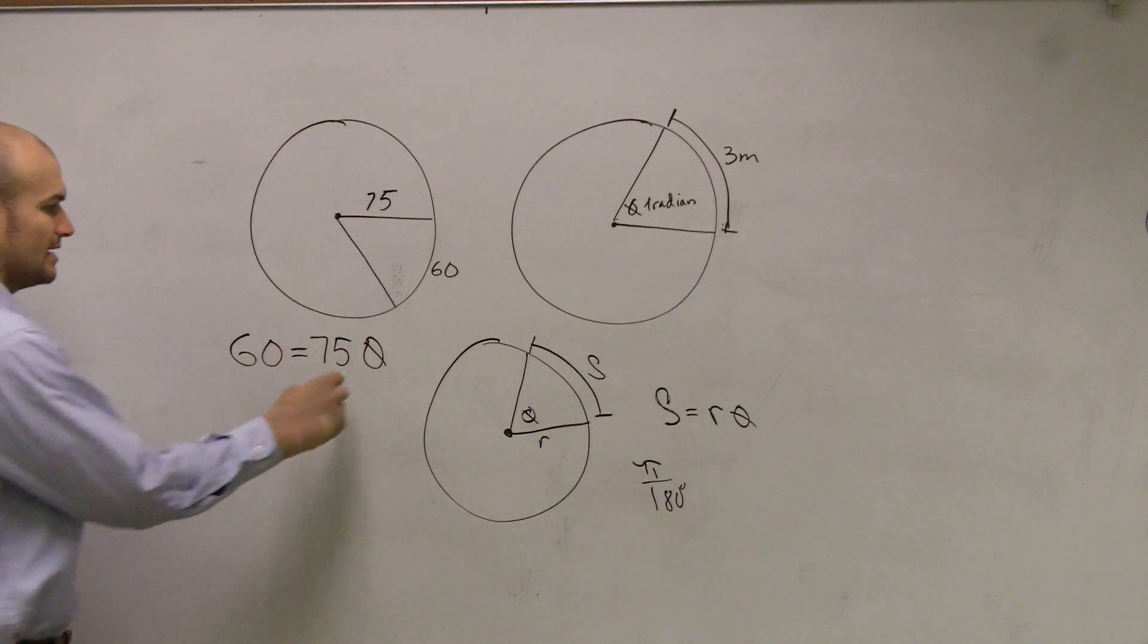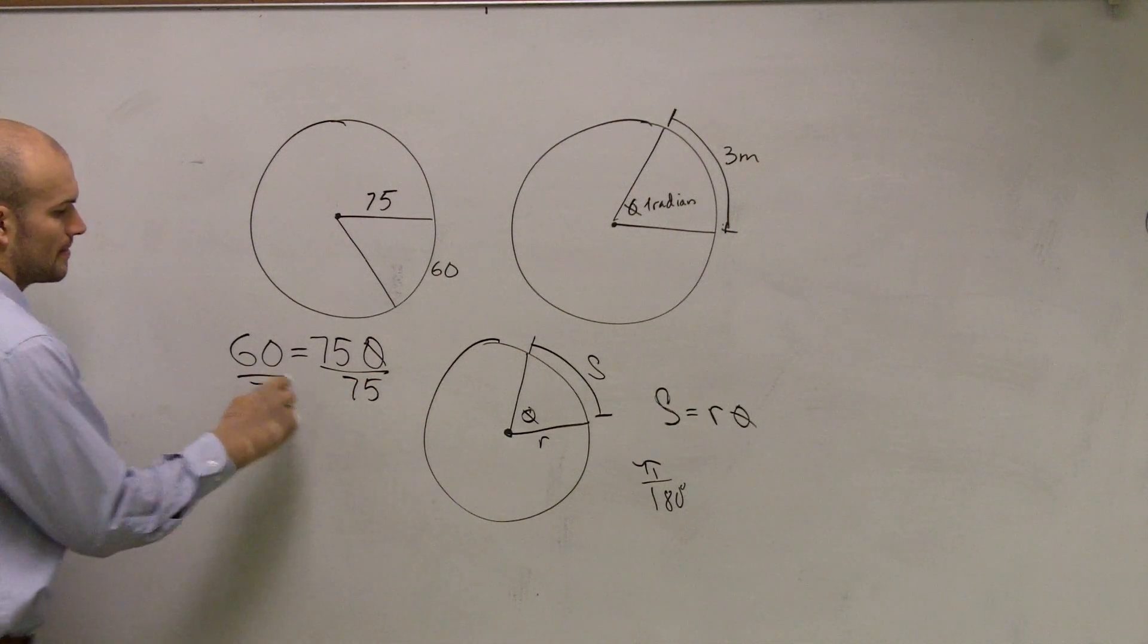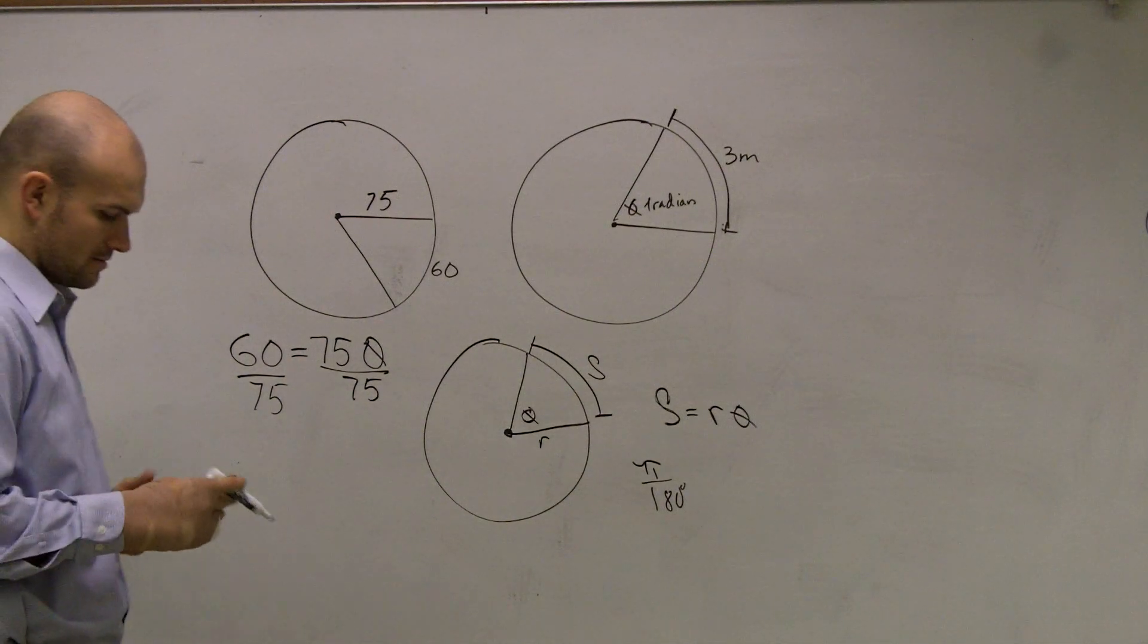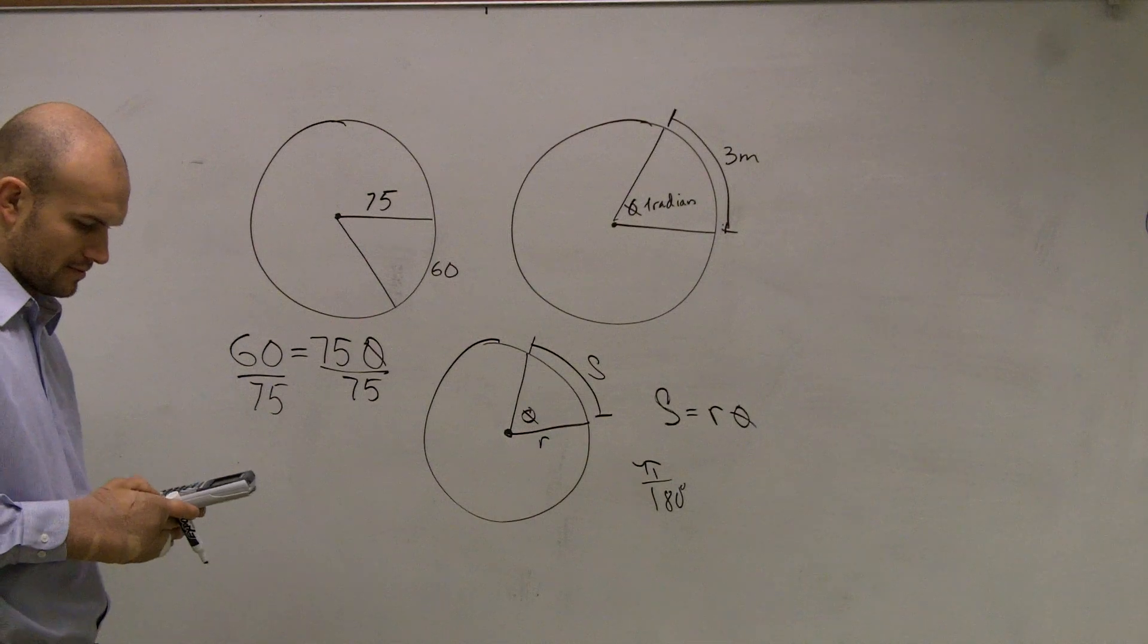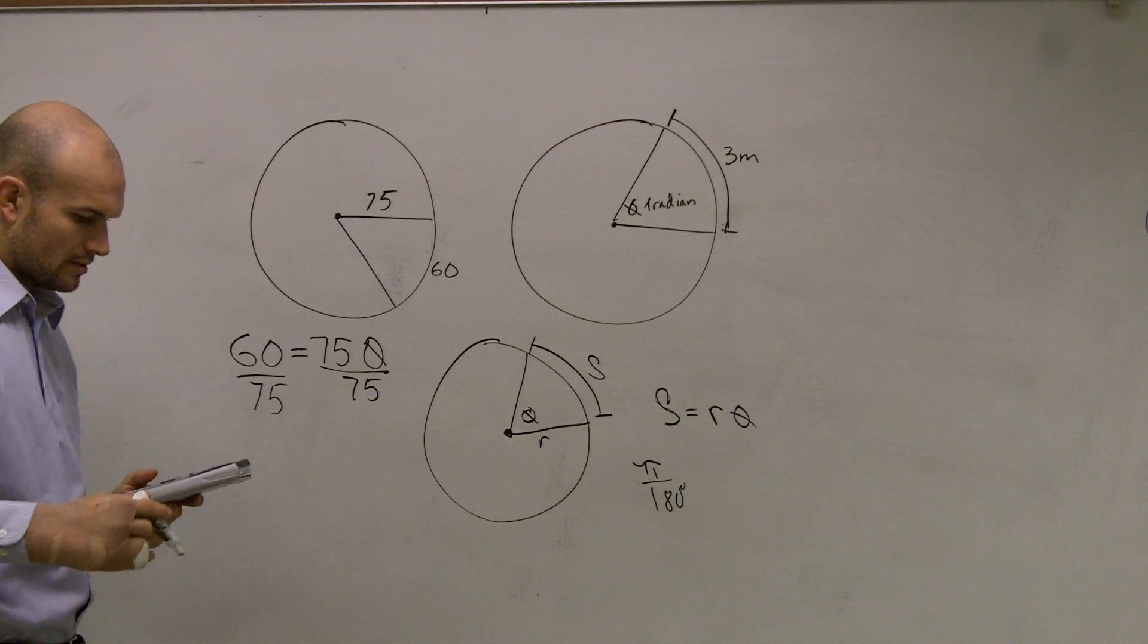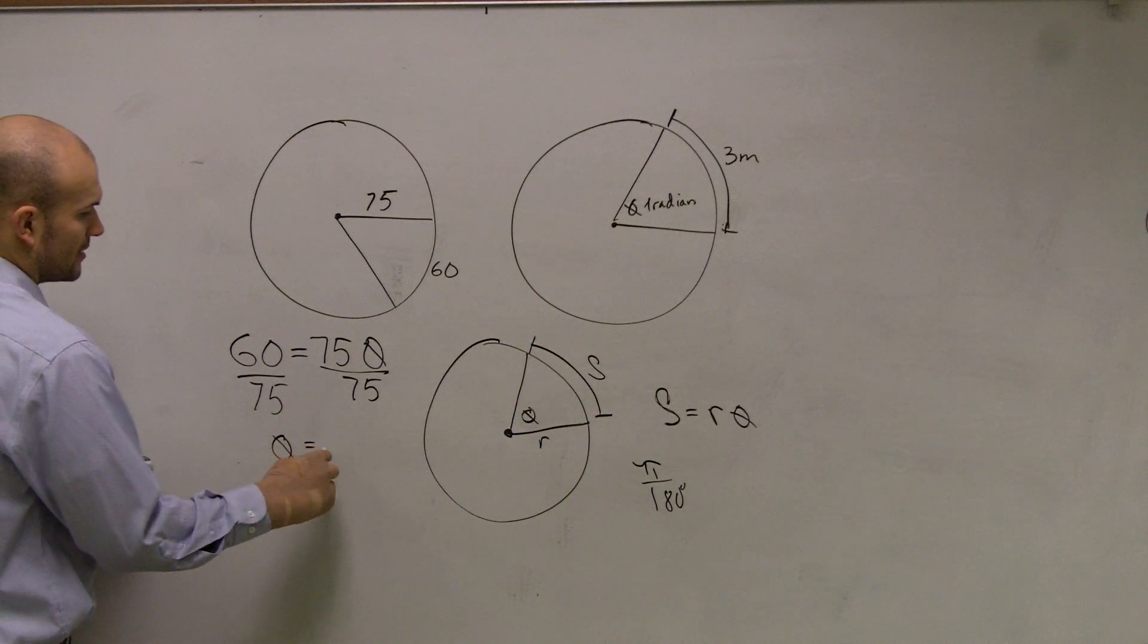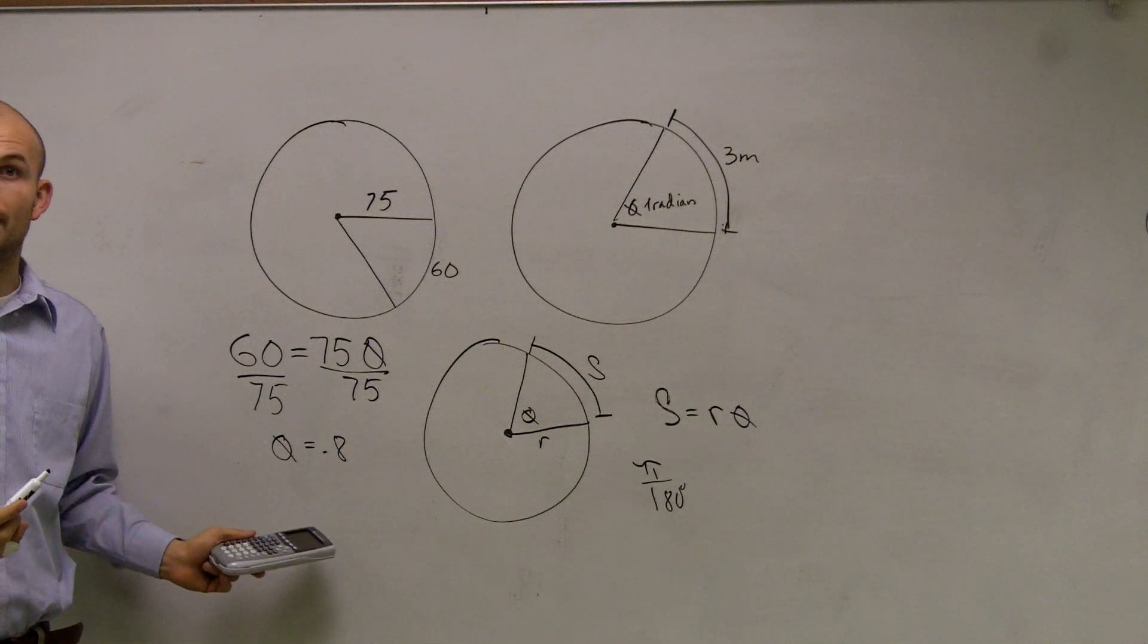Then to solve for theta, I'll divide by 75. And 60 divided by 75 is going to be 0.8. So you can say theta equals 0.8. That's 0.8 radians as the measurement of theta.